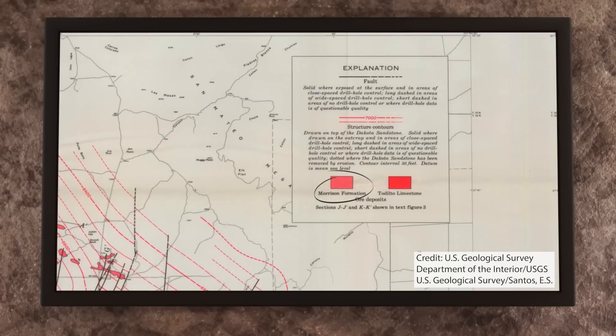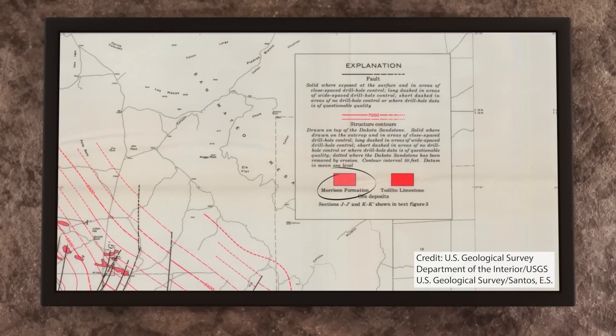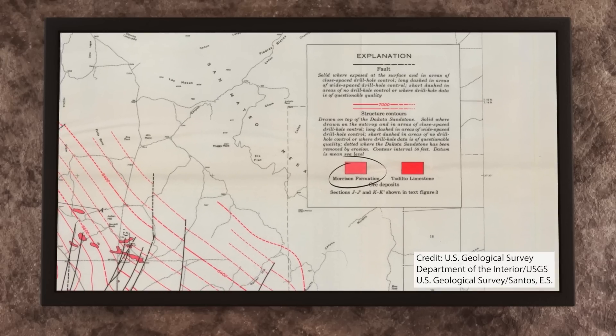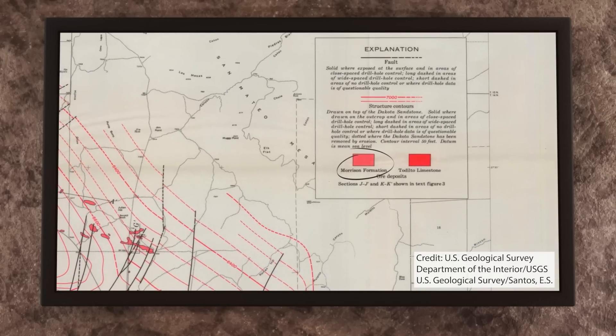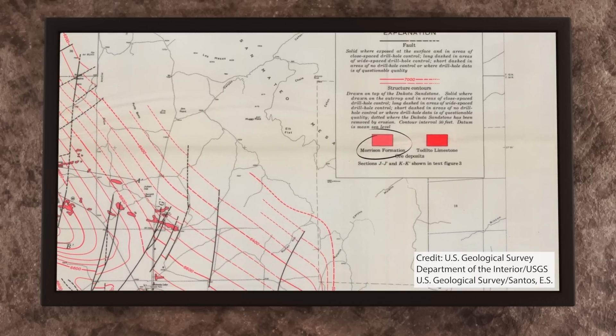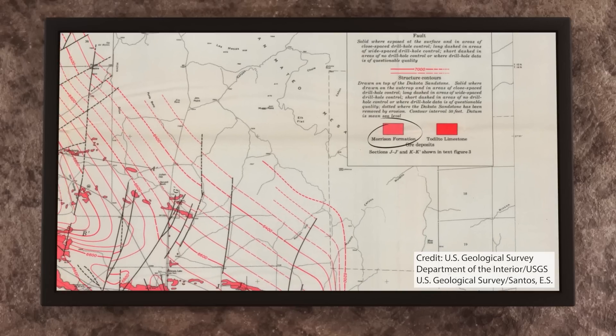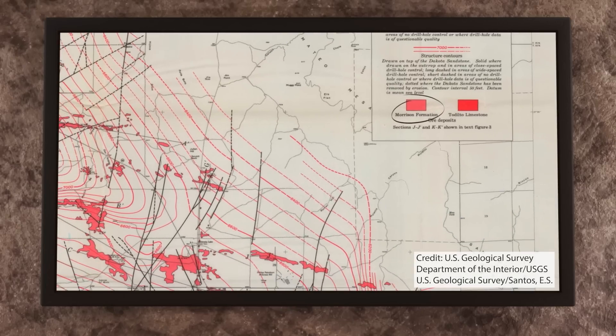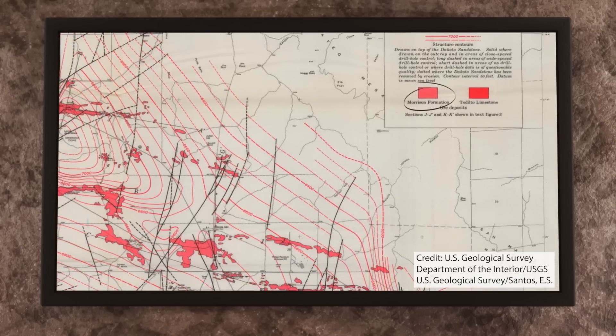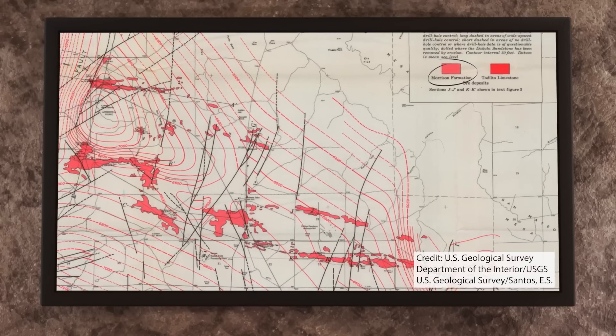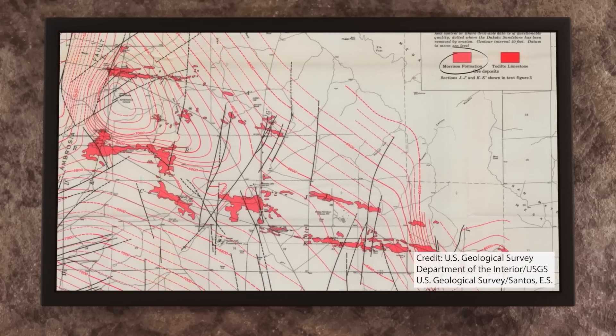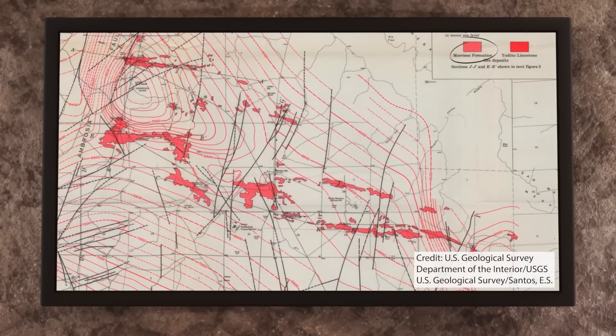The geologic features that we are looking at from this time is called the Morrison Formation. The Morrison Formation features many members within it. There are different members depending on their location. For example, in the southwest area of the United States, there are three members of the Morrison Formation exposed in New Mexico, where I am located.